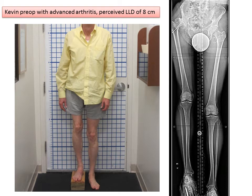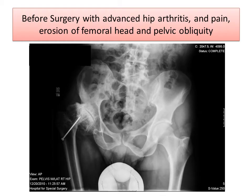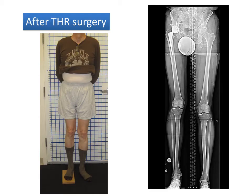I'd like to show you another case to illustrate this concept. Kevin, before surgery, had advanced arthritis and a perceived leg length discrepancy of 8 centimeters. Notice the tilt of the pelvis on the long x-ray. Before surgery, he had advanced arthritis, pain, erosion of the femoral head, and pelvic obliquity.